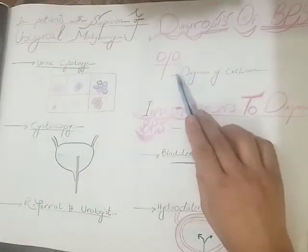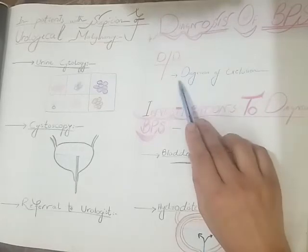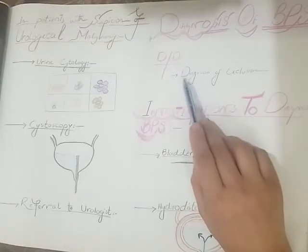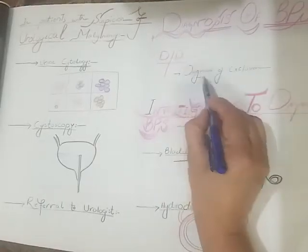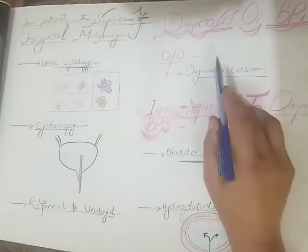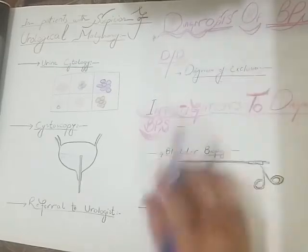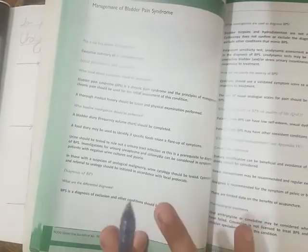Regarding differential diagnosis, bladder pain syndrome is a diagnosis of exclusion. Other conditions should be excluded before making the diagnosis of bladder pain syndrome.